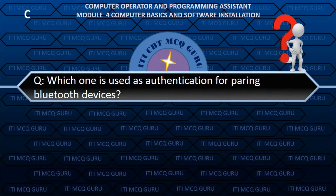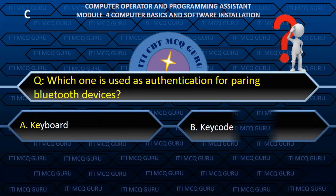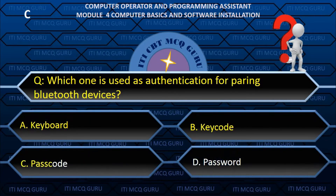Which one is used as authentication for pairing a Bluetooth device? — C. Passcode.